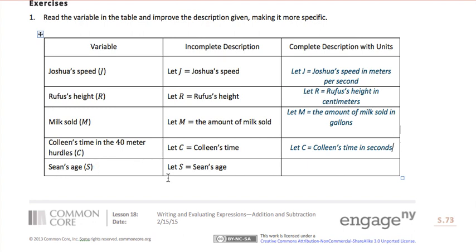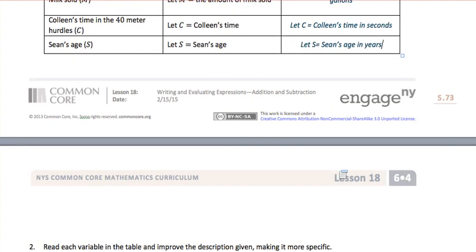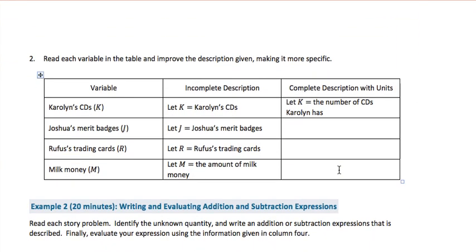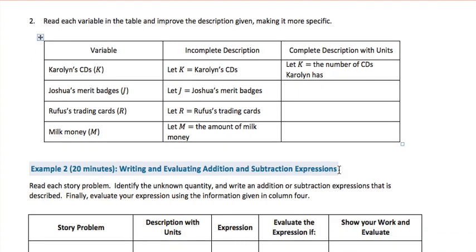And our last one: Sean's age, s. Let s equal Sean's age in years. While that might seem obvious, Sean might be a baby and we might be measuring it in months. So now we'll practice: read the variable in the table and improve the description given, making it more specific.